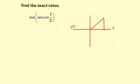Now I'm going to use u substitution. I'm going to let u equal arc cosine of one half.